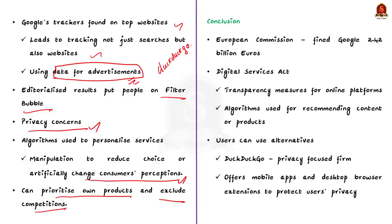These concerns have caught the eye of regulators, and search algorithms have come under scrutiny. The European Commission has fined Google 2.42 billion euros for abusing its market dominance as a search engine by giving an illegal advantage to its own products. Moreover, the European Union has proposed the Digital Services Act, in which transparency measures for online platforms — including the algorithms used for recommending content or products to users — are expected to come into force. Users also have the choice of not being manipulated by tech giants by using alternative search engines like DuckDuckGo, a privacy-focused firm that offers mobile apps and desktop browser extensions to protect users' privacy while browsing the web.